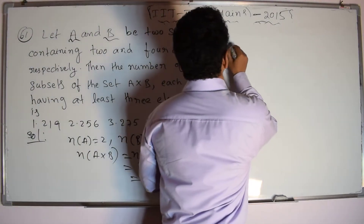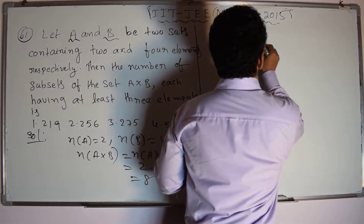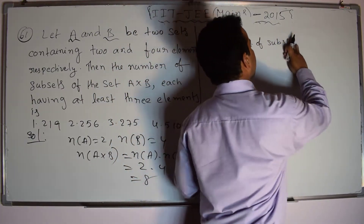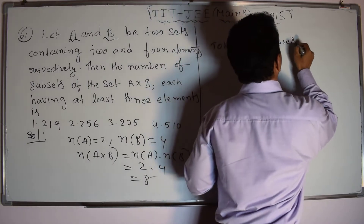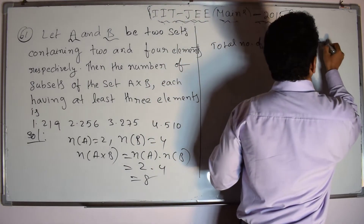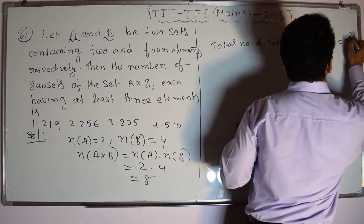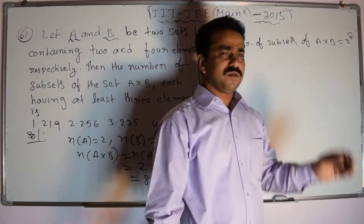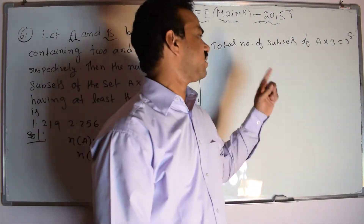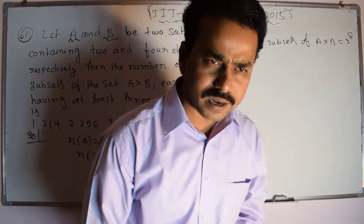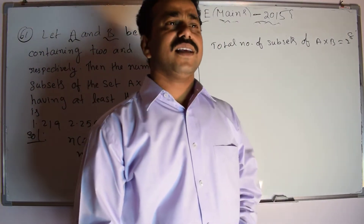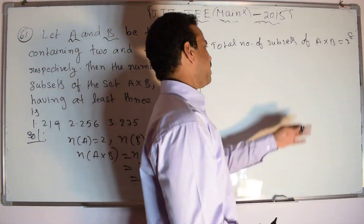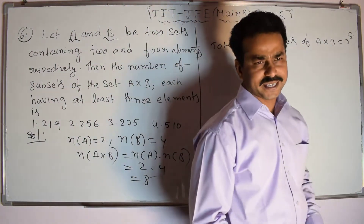Total number of subsets of A cross B equals 2 power 8. The formula is: if a set contains N number of elements, then the total number of subsets equals 2 power N. So here we have 2 power 8.